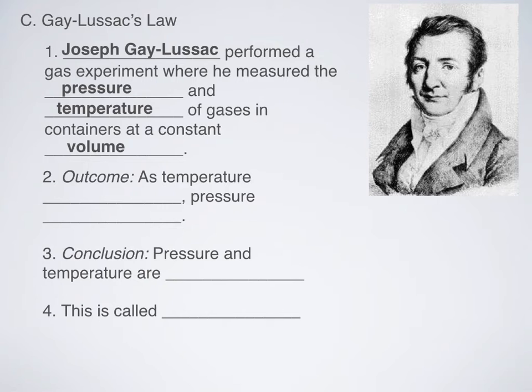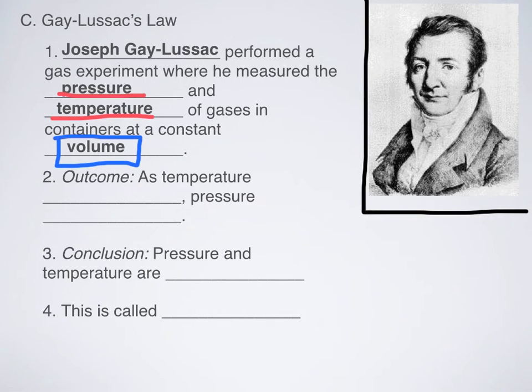Finally, we have Gay-Lussac. And so, Joseph Gay-Lussac, this is what he looks like right here. He was interested, and his experiment's a little bit more dangerous, in changes in pressure and in temperature. And, again, just like the previous guys, he found out that you have to keep something constant. And so, you have to keep volume constant in order for this to work.